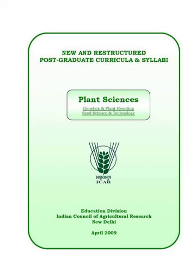Factors affecting pollination and seed set: temperature, humidity, wind velocity, insect pollination and supplementary pollination. Male sterility, self-incompatibility and their role in hybrid seed production. Techniques of hybrid seed production: emasculation and pollination, detasseling, male sterility, sex expression, self-incompatibility, and chemical hybridizing agents.